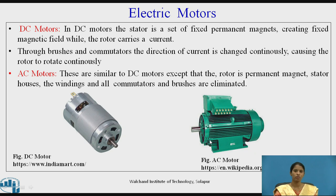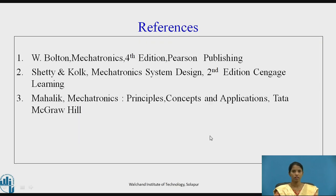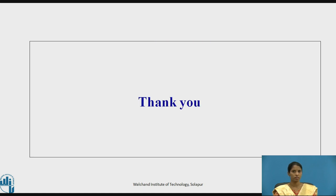The figure shows the DC motor with a set of permanent magnets and fixed magnetic field where the rotor carries a current, whereas in the AC motor the rotor is the permanent magnet. References: W. Bolton's book, Shetty and Colt's Mechatronic System Design, and Principles, Concepts and Applications by Tata McGraw-Hill. Thank you.